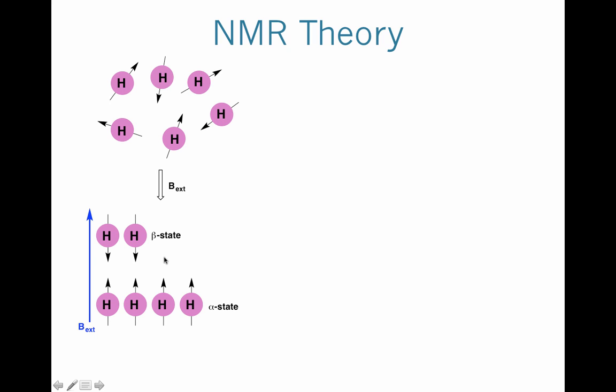Now, if we think of this in terms of energy, the beta state is higher energy, only by a very small amount, but it's still an energy difference. The alpha state is lower energy. What that means is more of our protons are going to align in that lower energy state. So that's why we have more present in the alpha state.